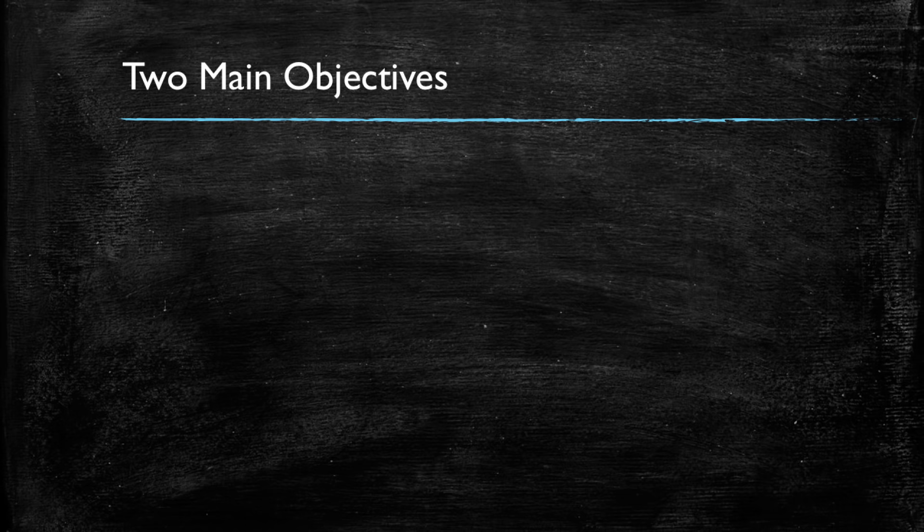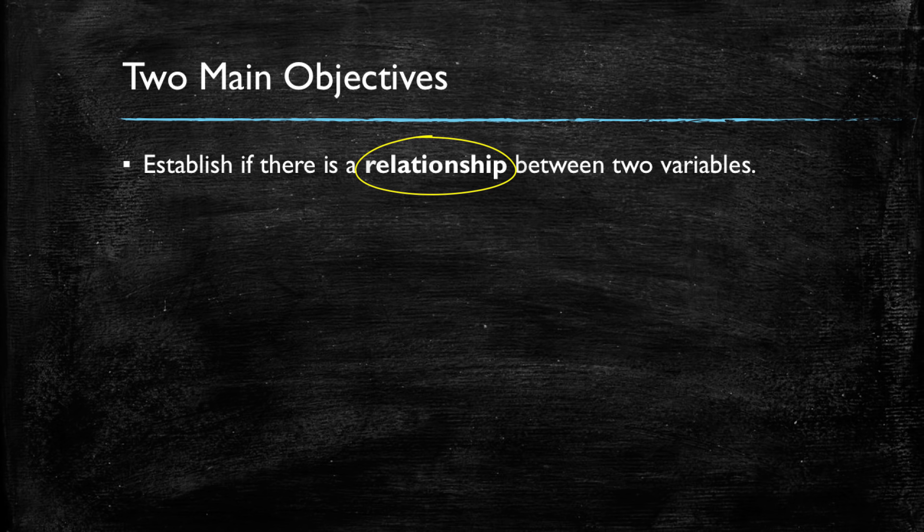The first one is to establish if there is a relationship between two variables. We're talking about a positive relationship between two variables if they tend to move together, meaning when one increases, the other one increases as well. Conversely, in a negative relationship, if one variable's values increase, the other variable's values tend to decrease.